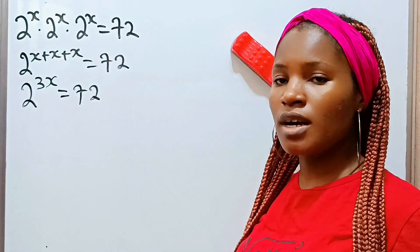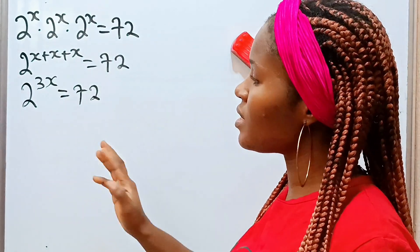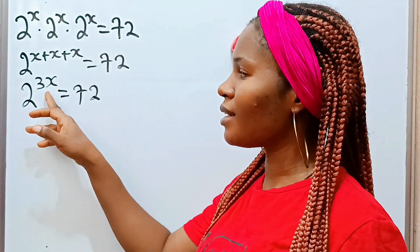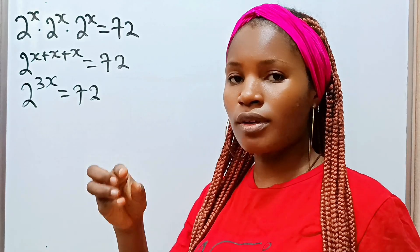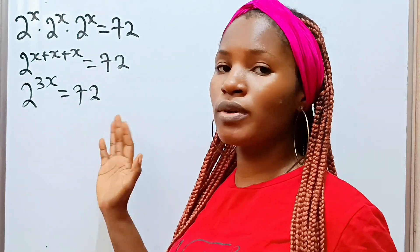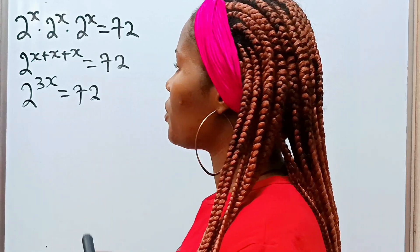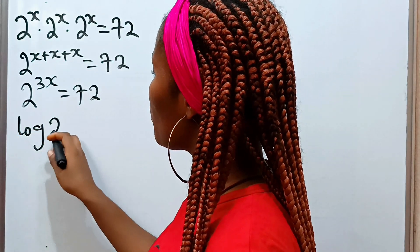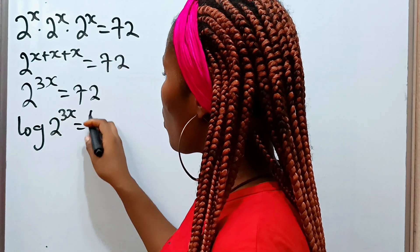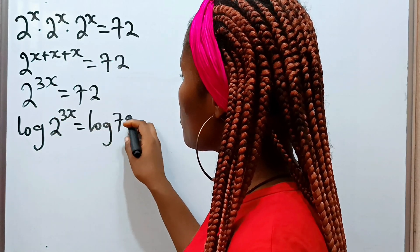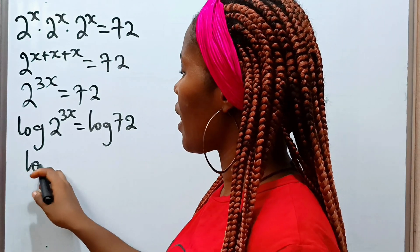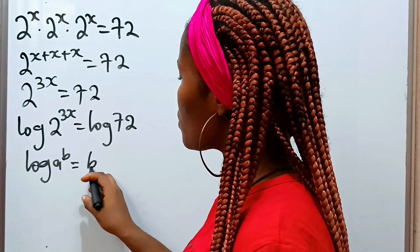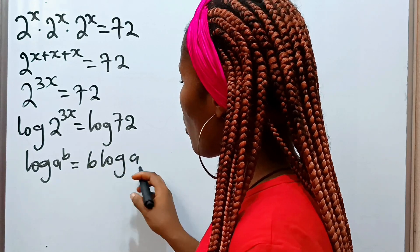Now we have to introduce log to both sides of this equation. The reason is that what we are looking for is the power, and there is no way to get this without the use of logarithms. So we introduce log to both sides, giving us log of 2 to the power of 3x is equal to log 72. Now when you have log a raised to the power of b, that is equal to b multiplied by log a.